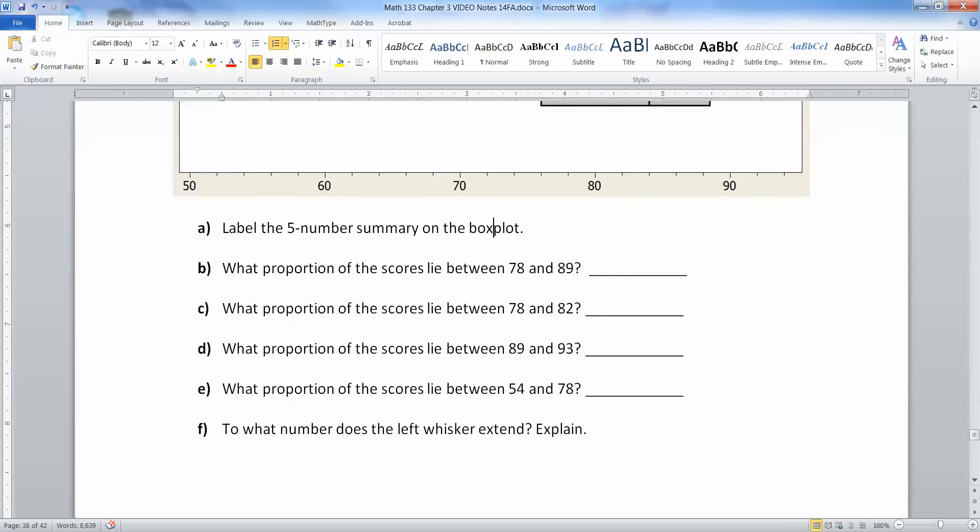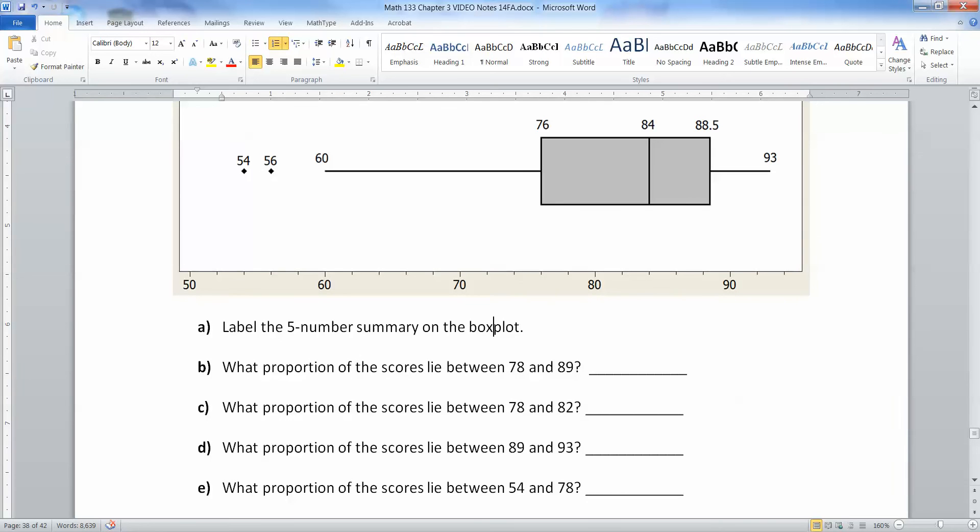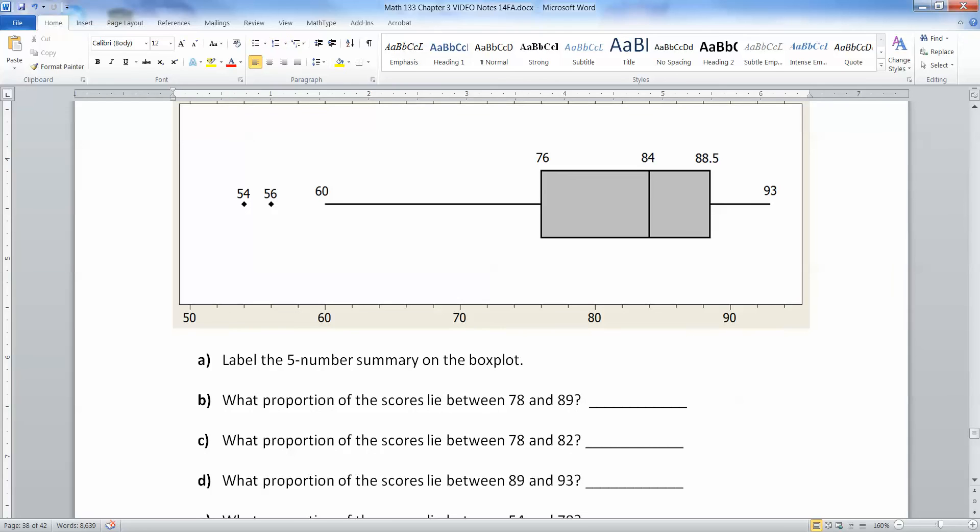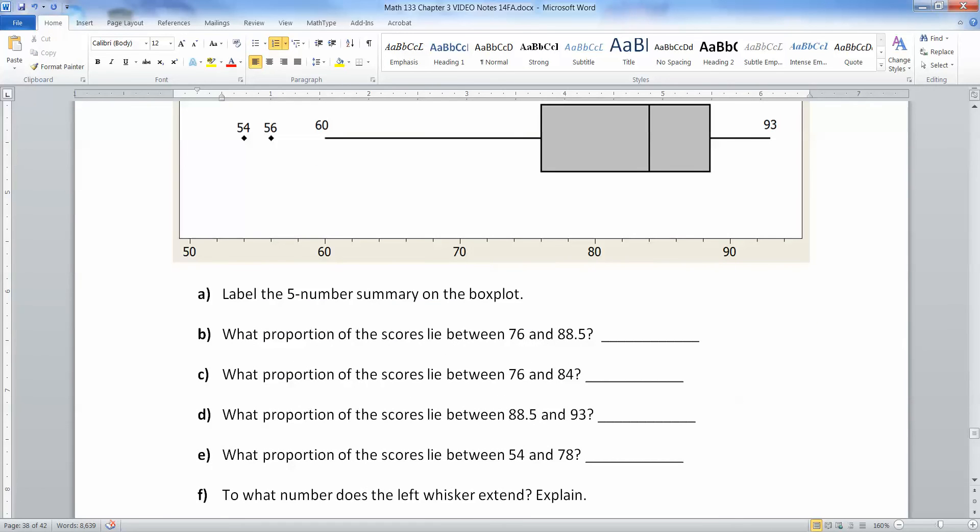So what proportion of scores lie between 78 and 89? And that is a typo, and I'm going to have to fix it. This is 76. This is 88.5. I don't know what I was doing when I did this. And then this must be 84. Let me go fix that for the notes for future. Hold on one second. And that one's got to change to 76, too. Sorry about that.